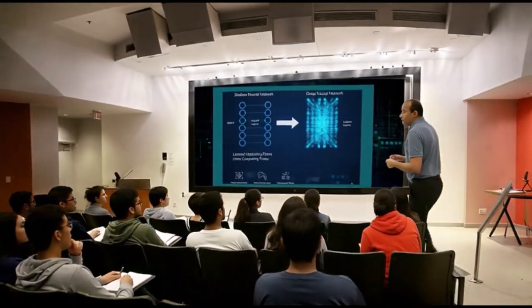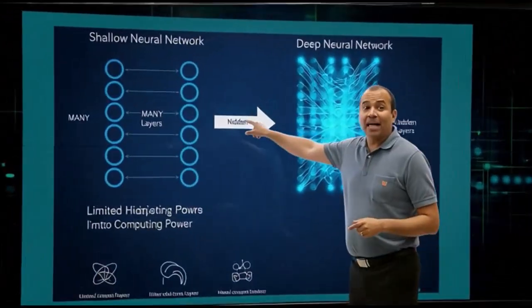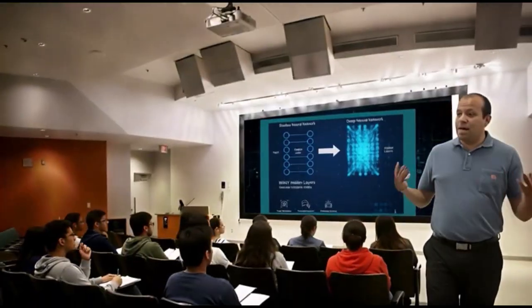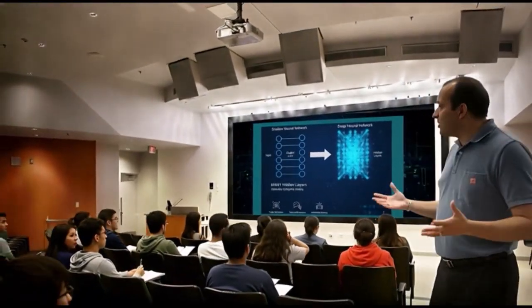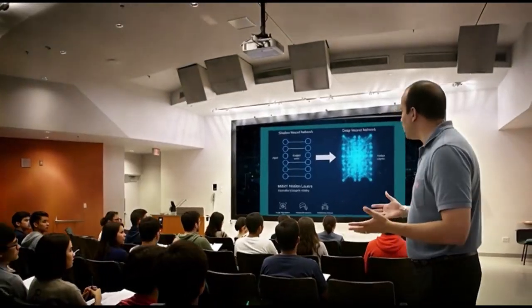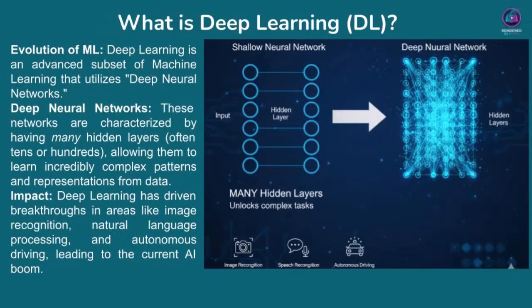Building on our understanding of neural networks, let's now look at deep learning, often referred to as DL. Deep learning isn't just a new type of AI — it's an advanced evolution of machine learning that has truly revolutionized the field in recent years. The key differentiator for deep learning lies in its use of deep neural networks, as you can see in the comparison on your screen.